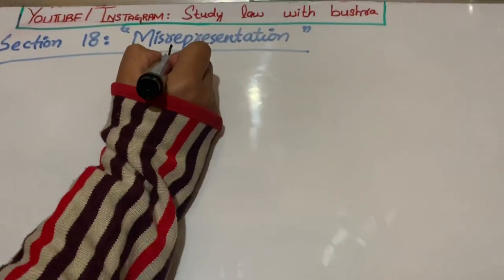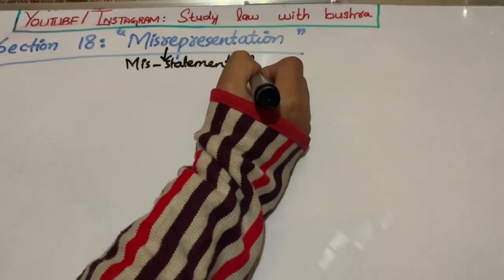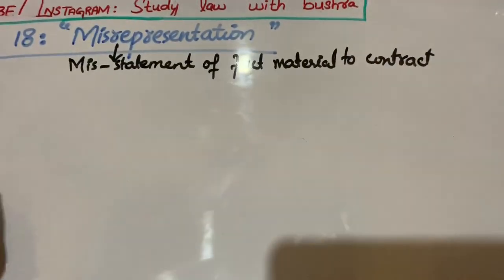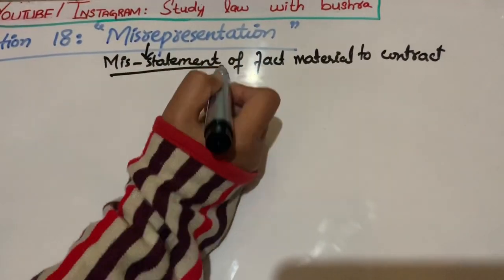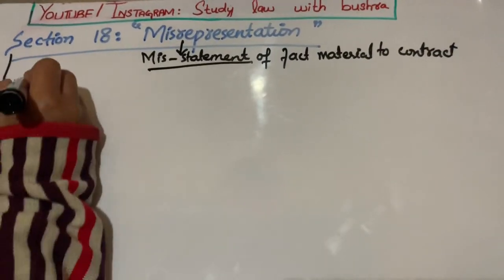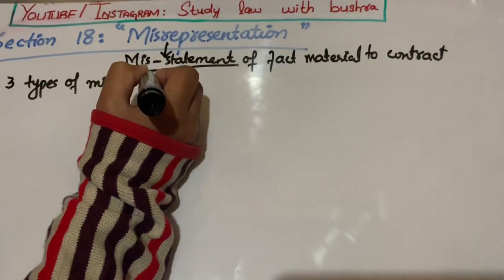Section 18: Misrepresentation. Misrepresentation کا مطلب ہے misstatement of the fact material to the contract - اس fact کے بارے میں کوئی statement دینا جو contract کے لیے بہت ضروری ہے. Section 18 کے according ہمارے پاس تین طرح کی misrepresentations ہوتی ہیں.